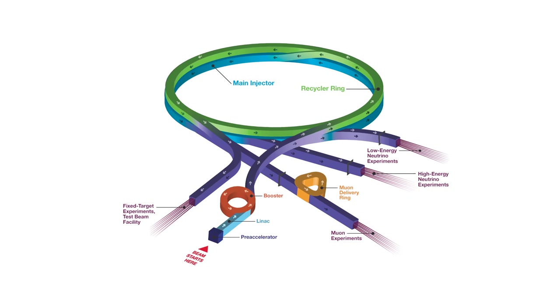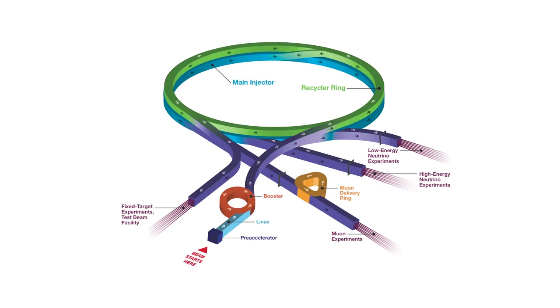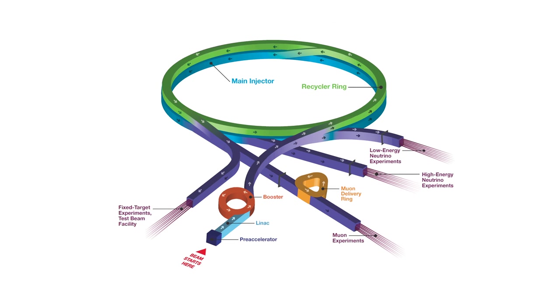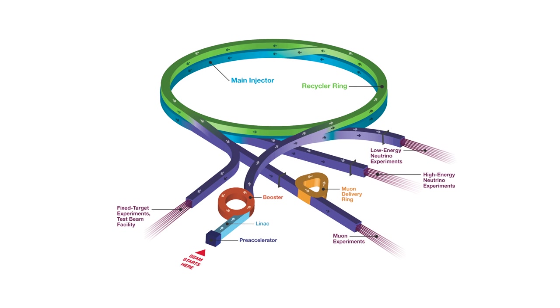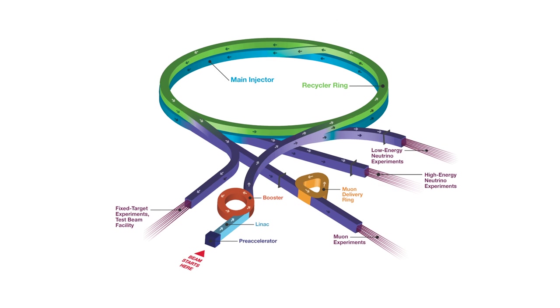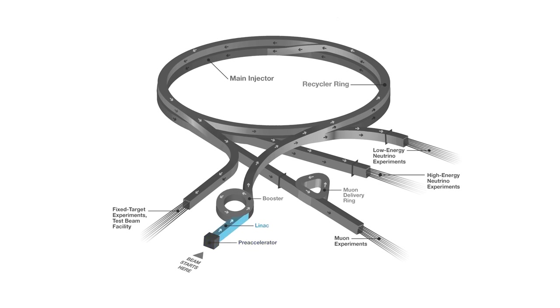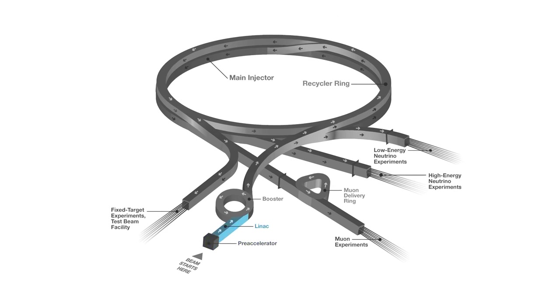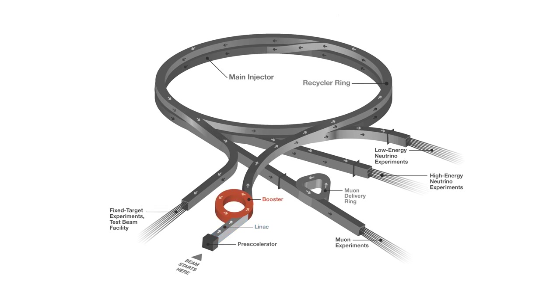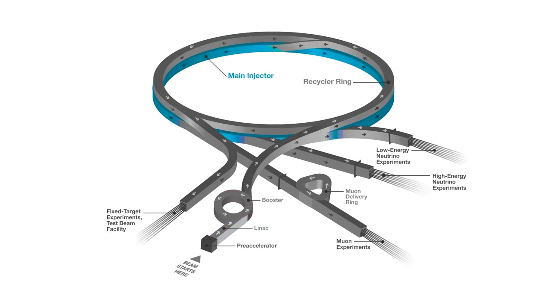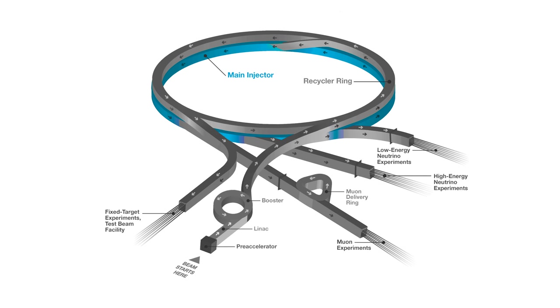We talk of the Fermilab accelerator as if it's just a single thing, but it actually consists of four very distinct accelerators, each designed to work at different speeds. We have the low-energy accelerator called the pre-accelerator, the medium-energy accelerator called the linear accelerator or LINAC, the high-energy accelerator which is called the booster, and the very high-energy accelerator which is called the main injector.